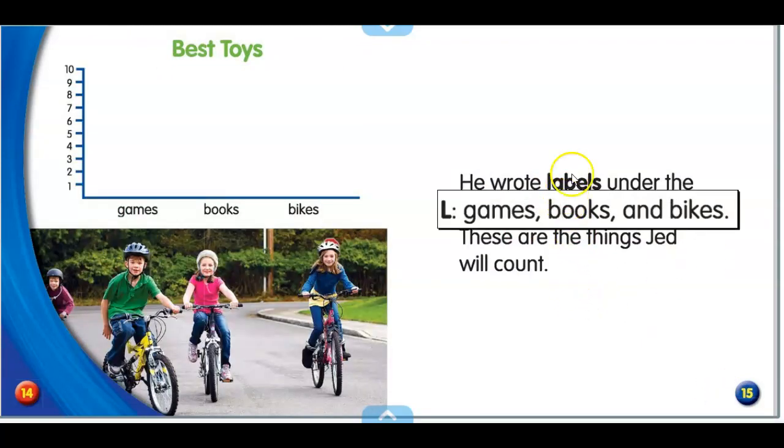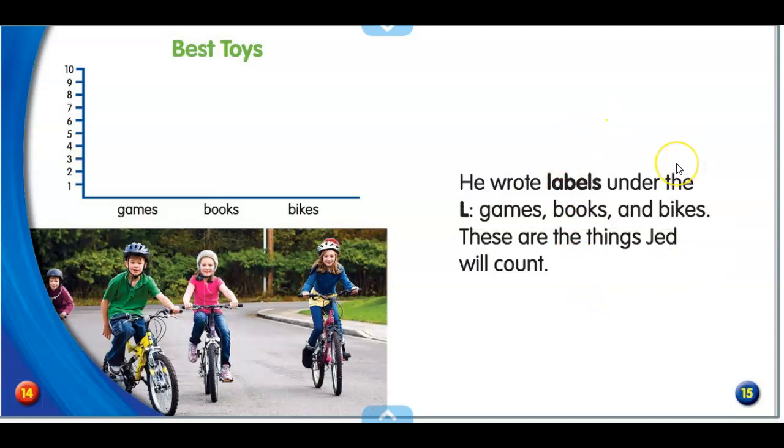He wrote labels under the L. Games, books, and bikes. These are the things Jed will count. Games, books, bikes. Those are the labels. Here's the number ten and the L to make his bar graph.